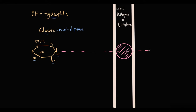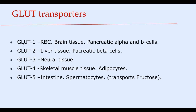This transporter is called GLUT transporters, which stands for glucose transport proteins. We have five GLUT transporters. GLUT 1 is present in red blood cells, brain tissue, and also on pancreatic beta and alpha cells. GLUT 2 is present in the liver tissue and also in pancreatic beta cells.